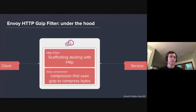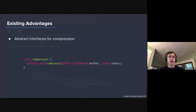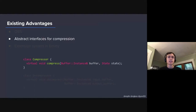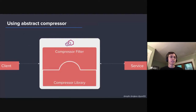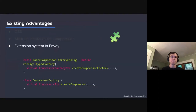The HTTP filter part deals with the HTTP level concerns, like looking for the Accept-Encoding header, or replacing the data frames with the compressed data. Then the filter itself uses the GZIP compressor, which is the one actually compressing the data buffers using the GZIP algorithm. Going back to the existing advantages, what became evident when looking at the filter this way is that there was nothing specific in the filter requiring the compressor to use GZIP, because it used this very simple interface — a compressor only has one function: it compresses.